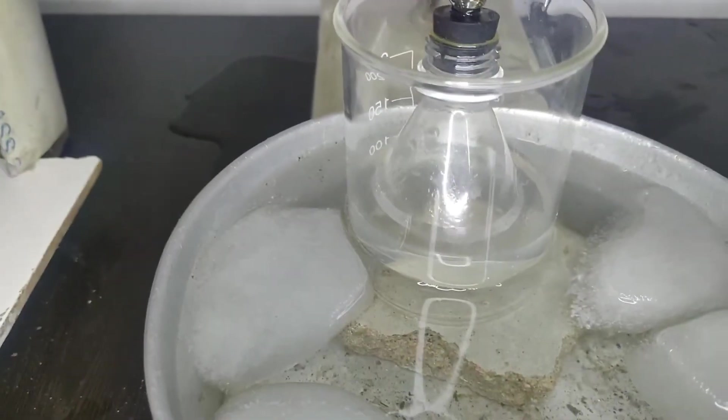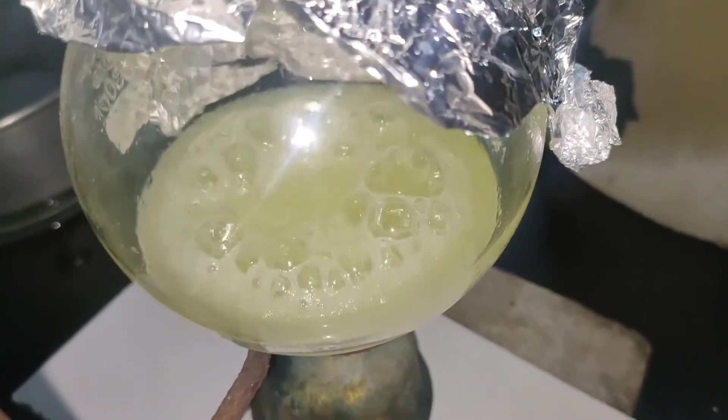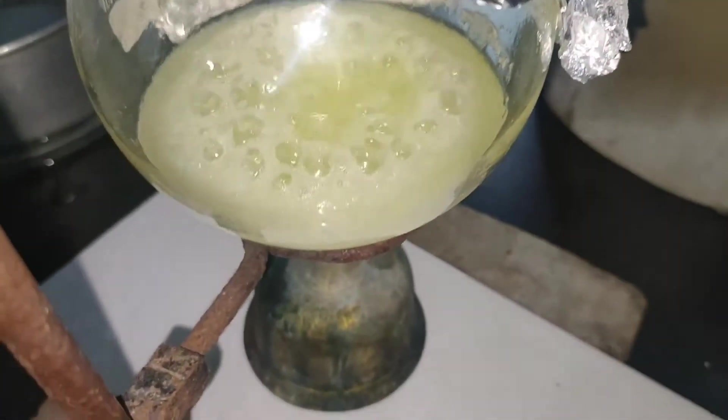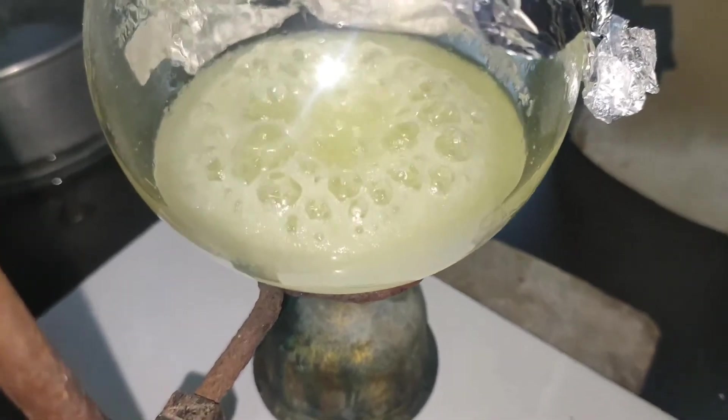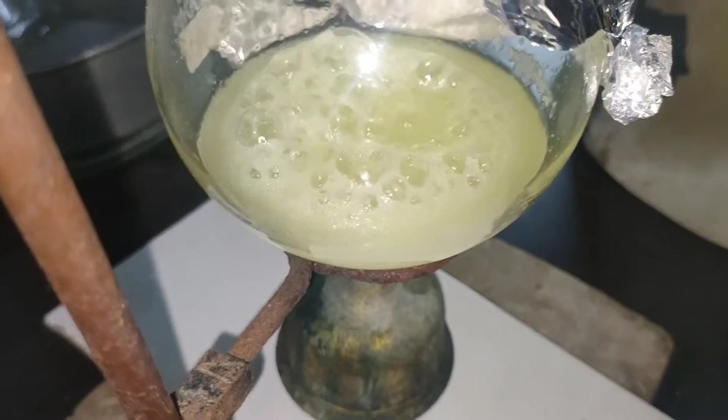Hydrogen chloride gas dissolved in water to form hydrochloric acid. You can see, this is inside of the flask. Hydrogen chloride gas is being produced. This is the reaction.